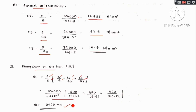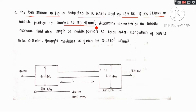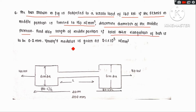This problem is now solved. Next problem: The bar shown in the figure is subjected to a tensile load of 160 kN. If the stress in the middle portion is limited to 150 N per mm², determine the diameter of the middle portion. Find also the length of the middle portion if the total elongation of the bar is to be 0.2 mm. Young's modulus is given as 2.1 × 10⁵ N per mm².